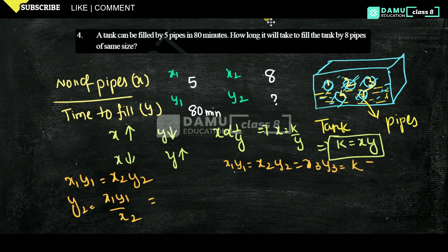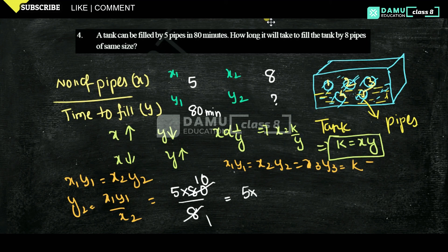Substituting: y2 equals x1 times y1 divided by x2, which is 5 times 80 divided by 8. That gives 400 divided by 8, equals 50 minutes. So it will take 50 minutes to fill the tank with 8 pipes. Thanks for watching, please subscribe.